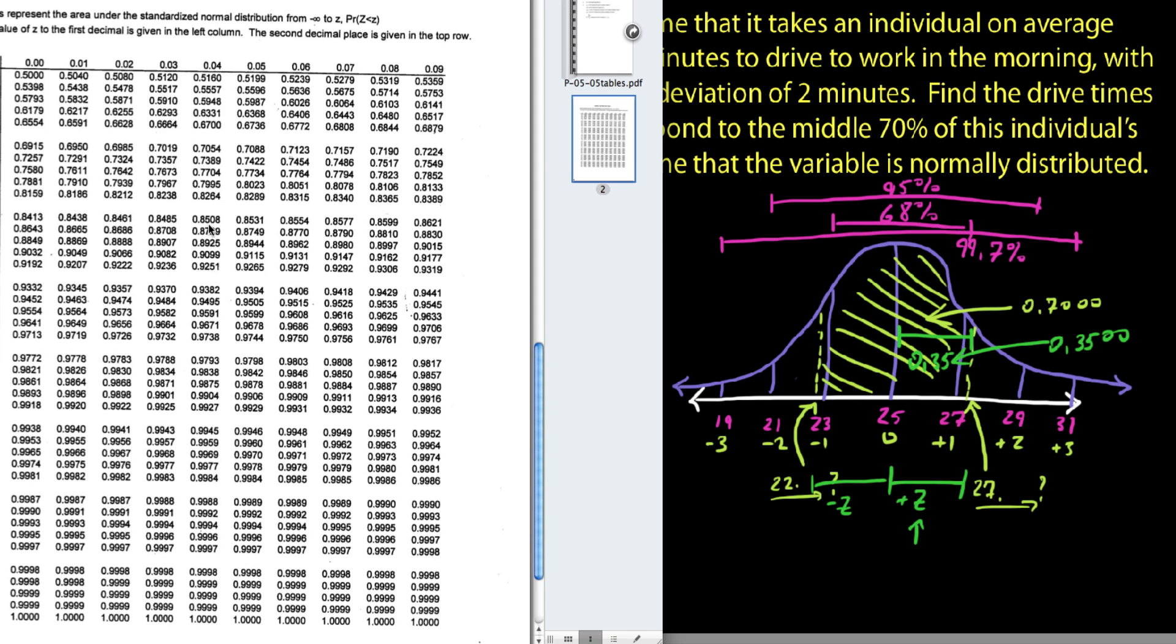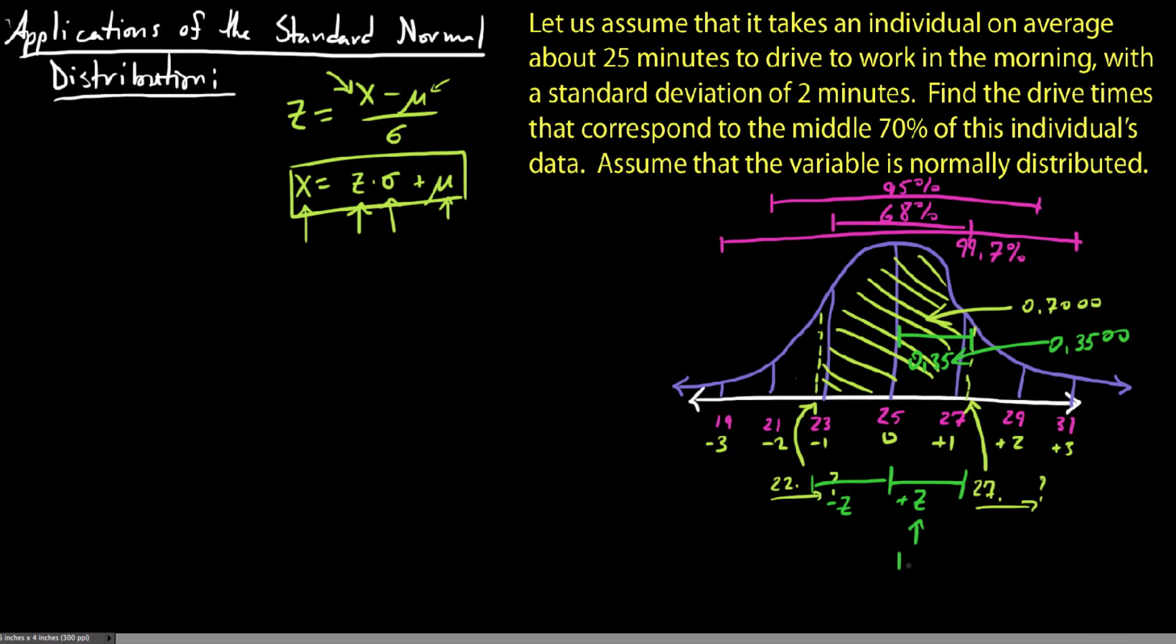The best we can do is 0.8508, and so that would be 1.04 standard deviations. 1.04 to the right is necessarily that, that's entirely reasonable. So that being said, let's walk it over here.